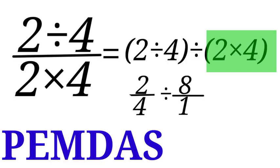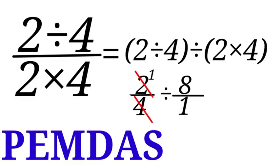Now 8 over 1 is the same as 8 — I just write it as a fraction with a numerator and denominator. We simplify 2 over 4: 2 divided by 2 is 1, and 4 divided by 2 is 2, giving us 1 over 2. So we now have 1 over 2, divided by 8 over 1.